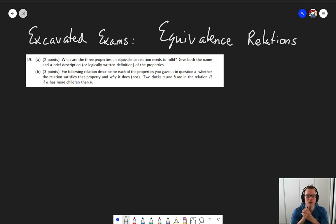And for the first question, what we need to do is we need to write down the three properties that an equivalence relation needs to have.